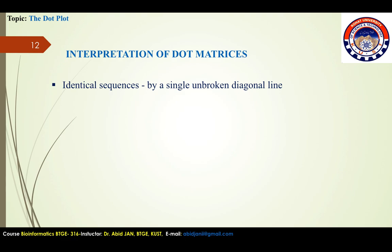Within a dot plot, two identical sequences are characterized by a single unbroken diagonal line across the plot. By contrast, two similar (but not identical) sequences will be characterized by a broken diagonal, with the interrupted regions indicating the locations of sequence mismatches.